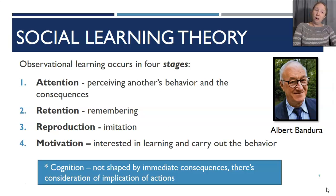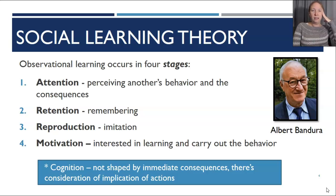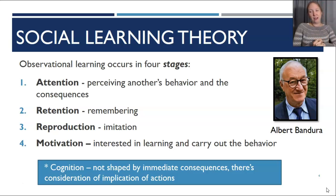Social learning theory was developed by Albert Bandura, our final big psychologist of the learning unit. He believed that observational learning occurred in four stages: attention, retention, reproduction, and motivation. First, someone has to be paying attention to someone else's behaviors and the consequences — rewards and punishments — that follow. Then they must retain and remember that sequence of events, consider whether they want to reproduce or imitate it, and finally determine if they have the motivation to carry it out.